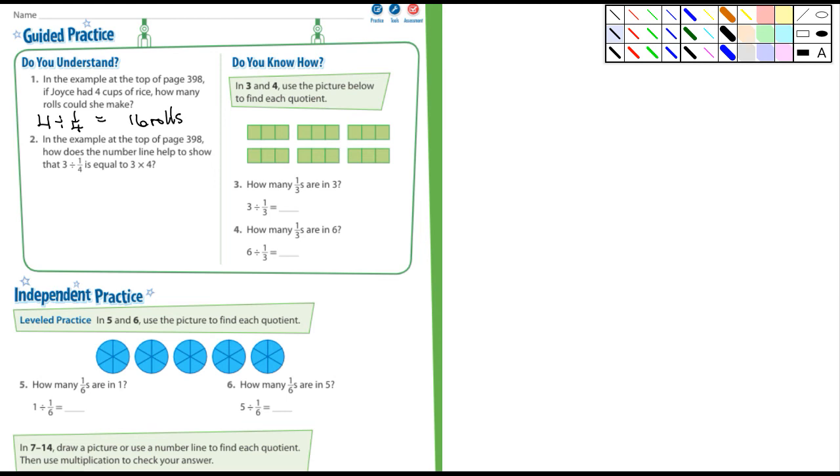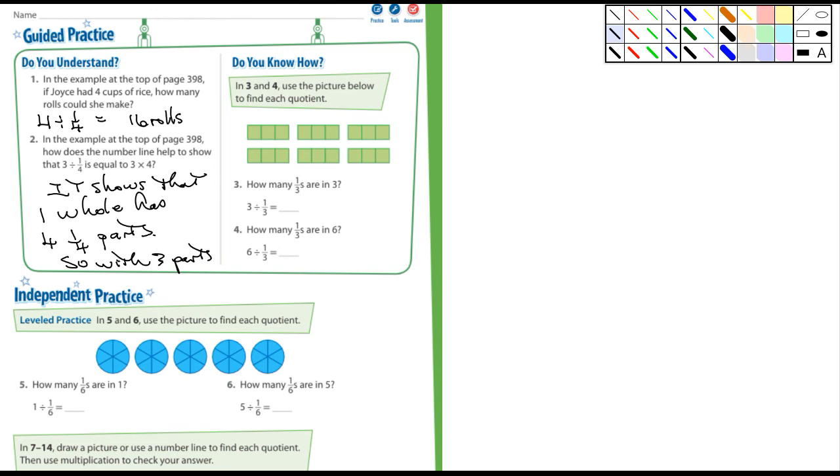In the example at the top of page 398, how does the number line help show that three divided by one quarter is equal to three times four? Well, it shows that one whole has four one-quarter parts. Well, there's lots of different ways you could phrase that. One hole has yeah, four one-quarter parts. So with three parts you have, should have a U there, 12.